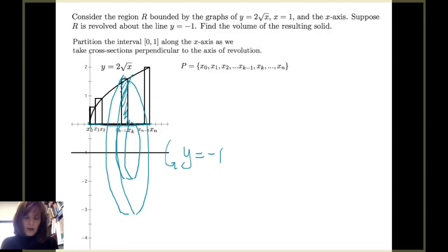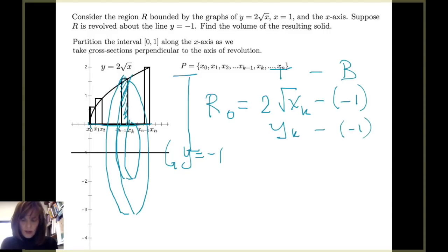Recalling that when we calculate the cross-sectional area of our washer, we have an outer radius, which I denote big R sub O, which is going to be the curve 2 times the square root of x sub k minus negative 1, because we always want to take top minus bottom. And this is y sub k minus y equals negative 1.